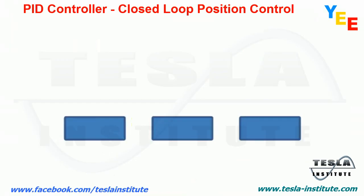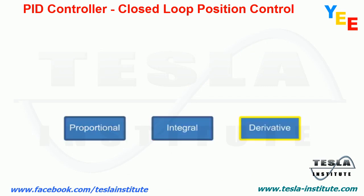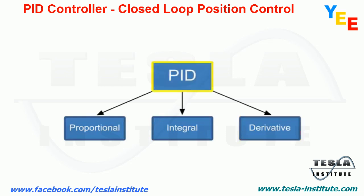A closed-loop control system for position control is comprised of proportional, integral, and derivative circuits, and is often referred to as a PID.